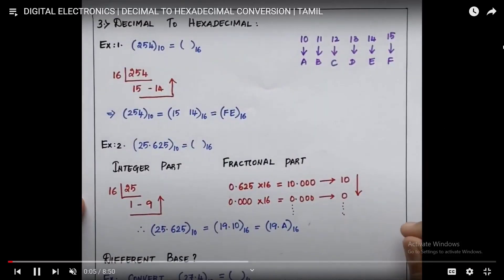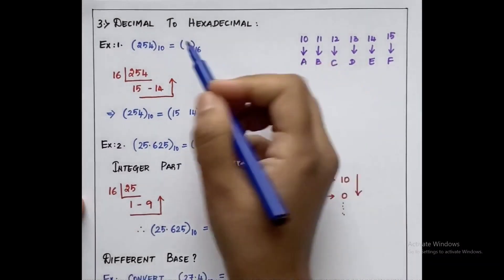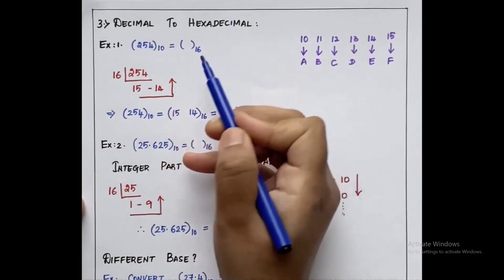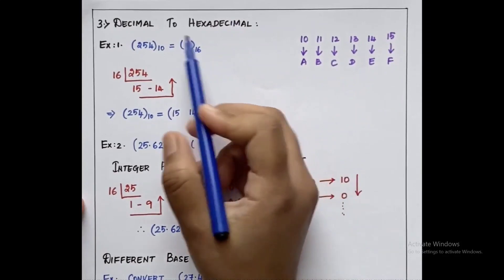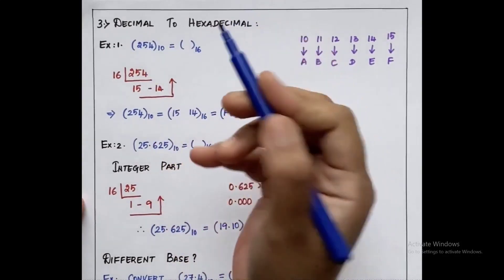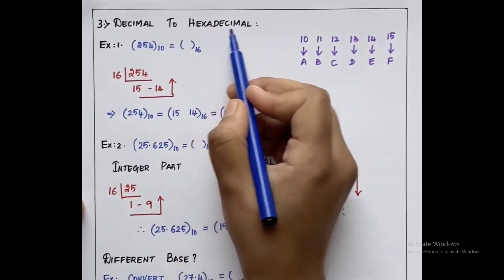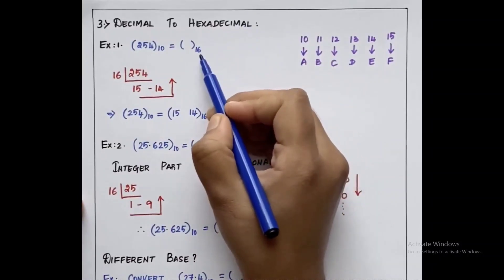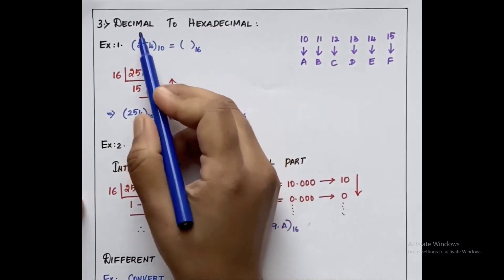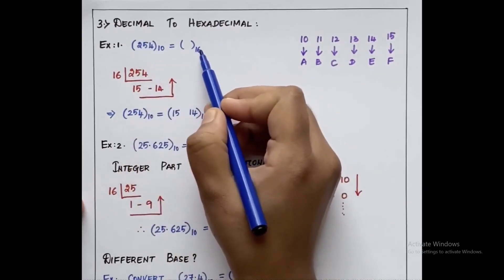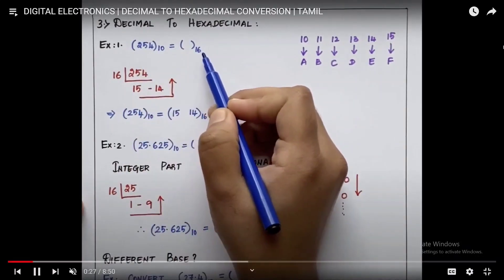Hello friends, welcome to Learners Forum. In the last video we saw the conversion from decimal to octal. This video is all about conversion from decimal to hexadecimal. As we know, decimal is represented with base 10 and hexadecimal is represented with base 16.